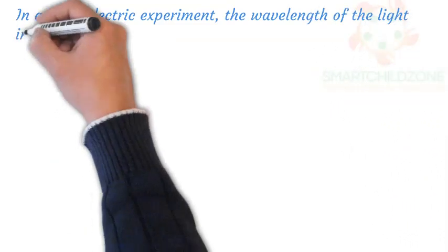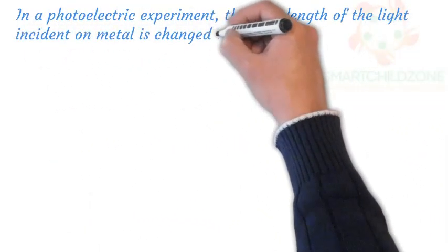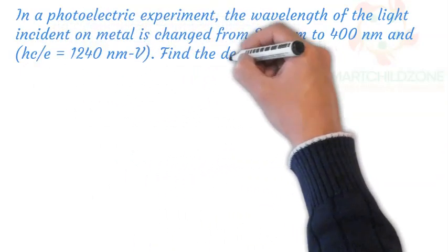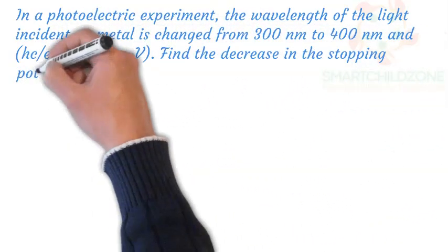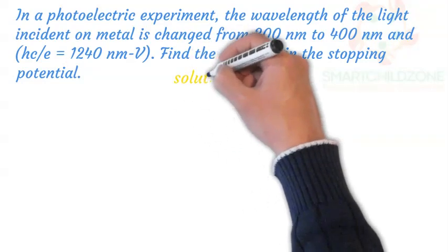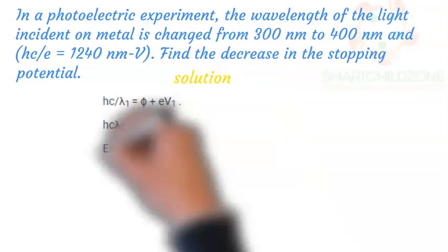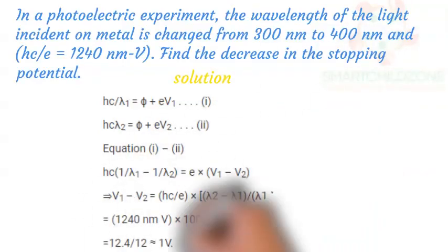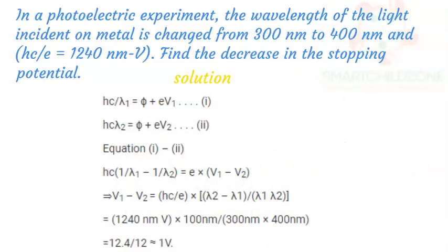In a photoelectric experiment, the wavelength of the light incident on the metal is changed from 300 nanometers to 400 nanometers, and hc over e equals 1240 nanometer volts. Find the decrease in the stopping potential. Therefore, the decrease in the stopping potential during the photoelectric experiment is 1 volt.